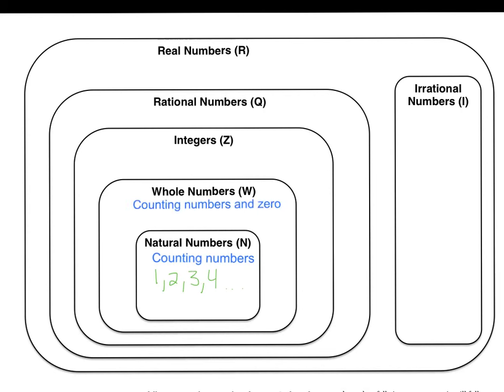Next we have whole numbers. Whole numbers are all the counting numbers and zero. So we have zero, one, two, three, four, etc.